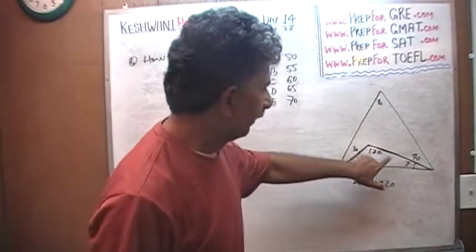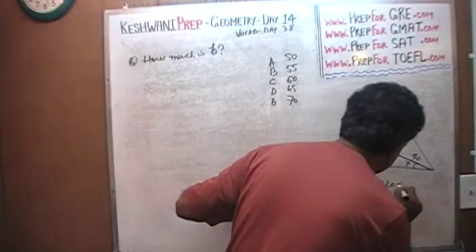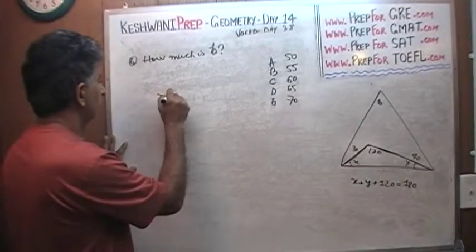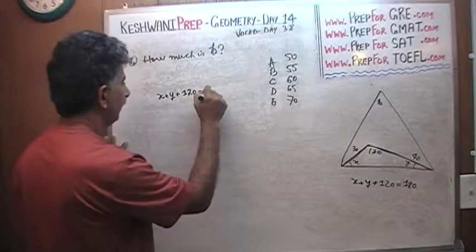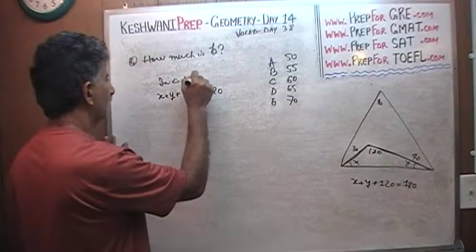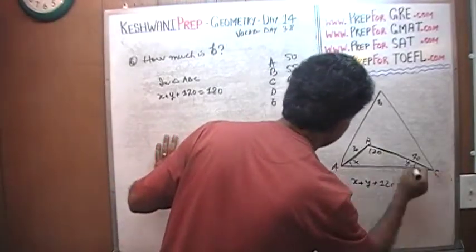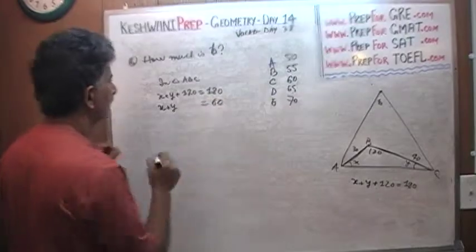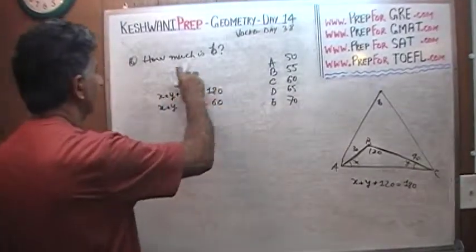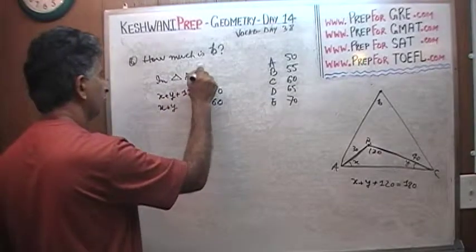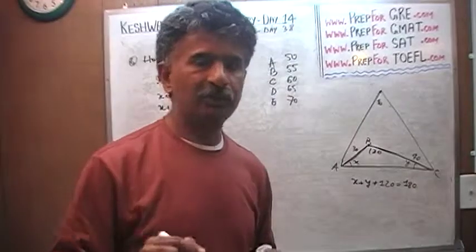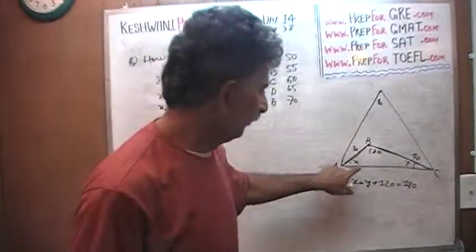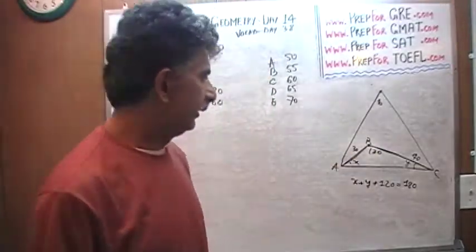Even though we know nothing about x and y individually, what can you tell me about x plus y plus 120? Well, x plus y plus 120 in this small triangle must equal 180, because we know that the sum of the angles in a triangle equals 180. Therefore, x plus y plus 120 must equal 180 in triangle ABC. Let's call it ABC: A, B, C. Therefore, x plus y must equal 60 in triangle ABC. So even though we know nothing about x and y individually, we do know for a fact that whatever they are, they must add up to 60 degrees.